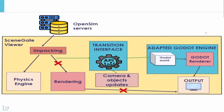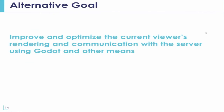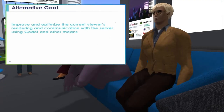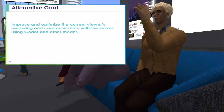This is an overview of our goals for the new SceneGate viewer's rendering process. There might be some changes that come with new challenges during development, but for now we will continue with this structure. In the case that everything discussed turns out to be an impossible task, we still have an alternative goal: to improve and optimize the current viewer's rendering and communication with the server using Godot and other means at our disposal.